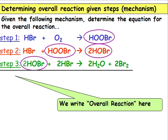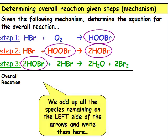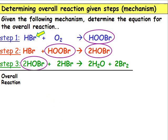We write the words overall reaction here. We add up all the species remaining on the left side of the arrows and write them here. There is 1, 2, and 2 more, which is a total of 4 HBr molecules. So we write 4 HBr molecules here in the overall reaction. And there is 1 molecule of O2 remaining on the left side, so we add it here in the overall reaction.